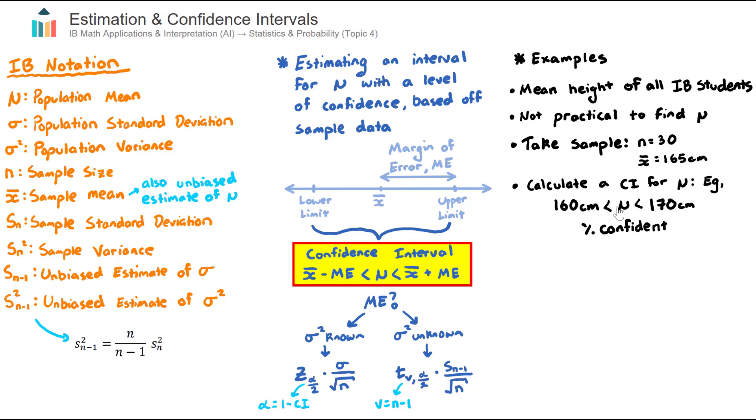I could say here, and I haven't actually done the calculations, but let's just say it is 90%. I could say I'm 90% confident, based off my sample, that the population mean lies within 160 centimeters up to 170 centimeters. So that's what we're working towards here, building a confidence interval with a level of confidence attached to it.